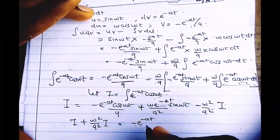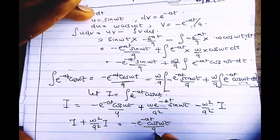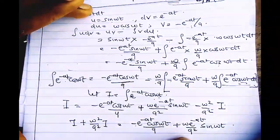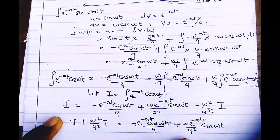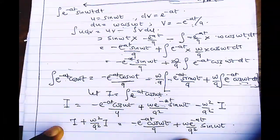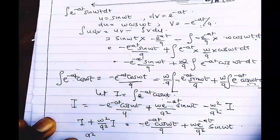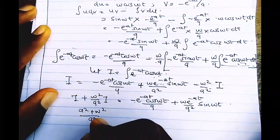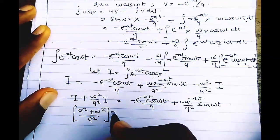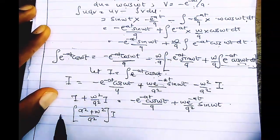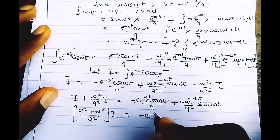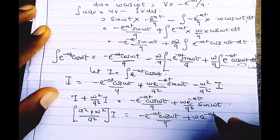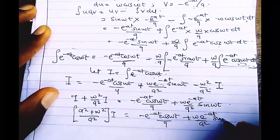Factoring the left side, we have (a² + w²)/a² times I. The right-hand side is: -e^(-at) cos(ωt)/a + w·e^(-at)/(a²) · sin(ωt). Simplifying the left side by factoring out I gives: I · (a² + w²)/a².